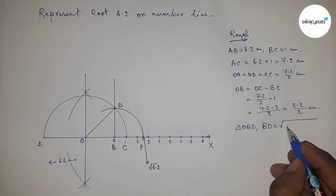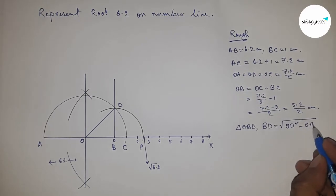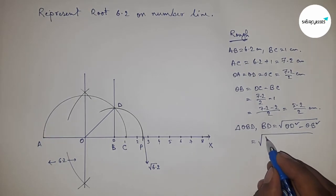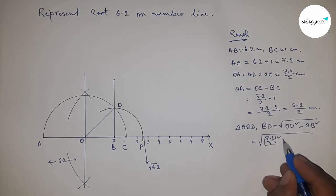BD equal to root of OD square minus OB square. Now putting the value of OD and OB.